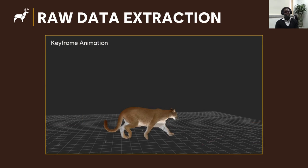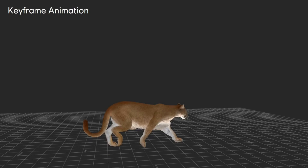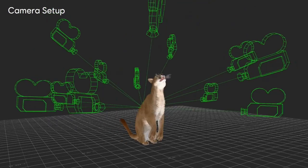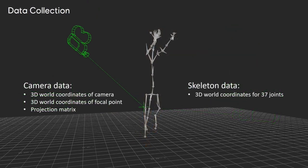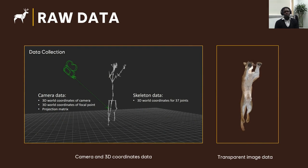The process of generating those data goes as follows. We firstly import into MotionBuilder the keyframe animation file of the animal, then place within the scene a set of cameras centred on the animal. For each frame of the animation and for each camera perspective, we extract the 3D world coordinates of 37 joints that compose the skeleton of the animal, together with camera parameters such as the camera 3D world coordinates, the 3D world coordinates of its focal points, and its projection matrix. In addition, we also extract for each frame and each camera the image captured with a transparent background. All these represent the raw data extracted from the FBX animation file.